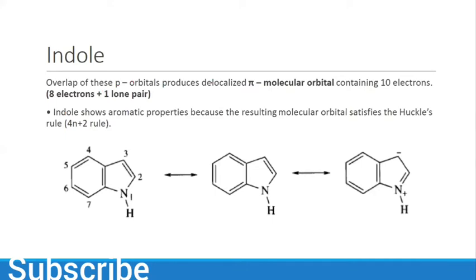Overlap of these p orbitals produces delocalized pi molecular orbitals containing 10 electrons: 8 electrons plus one lone pair. The lone pair of nitrogen takes part in resonance and obeys Huckel's rule, which is 4n+2, showing aromatic properties.